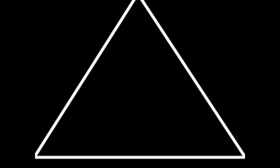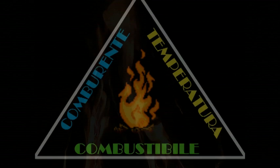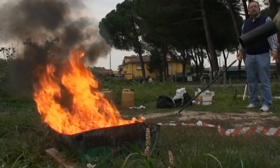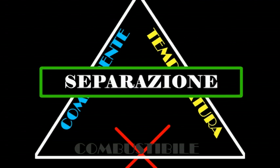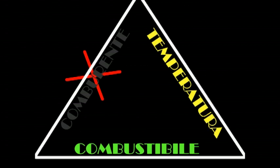Perché avvenga la combustione, occorre la contemporanea presenza di questi tre elementi. Allo stesso modo di come si presenta, il fuoco si estingue quando viene a mancare uno degli elementi che lo compongono. Per estinguere un incendio è possibile agire eliminando il combustibile: tale azione significa agire per separazione. Agendo sul comburente ed eliminando il contatto diretto tra combustibile e ossigeno, agiremo per soffocamento. Abbassando la temperatura al di sotto di quella di accensione del materiale, estingueremo invece il fuoco per raffreddamento.